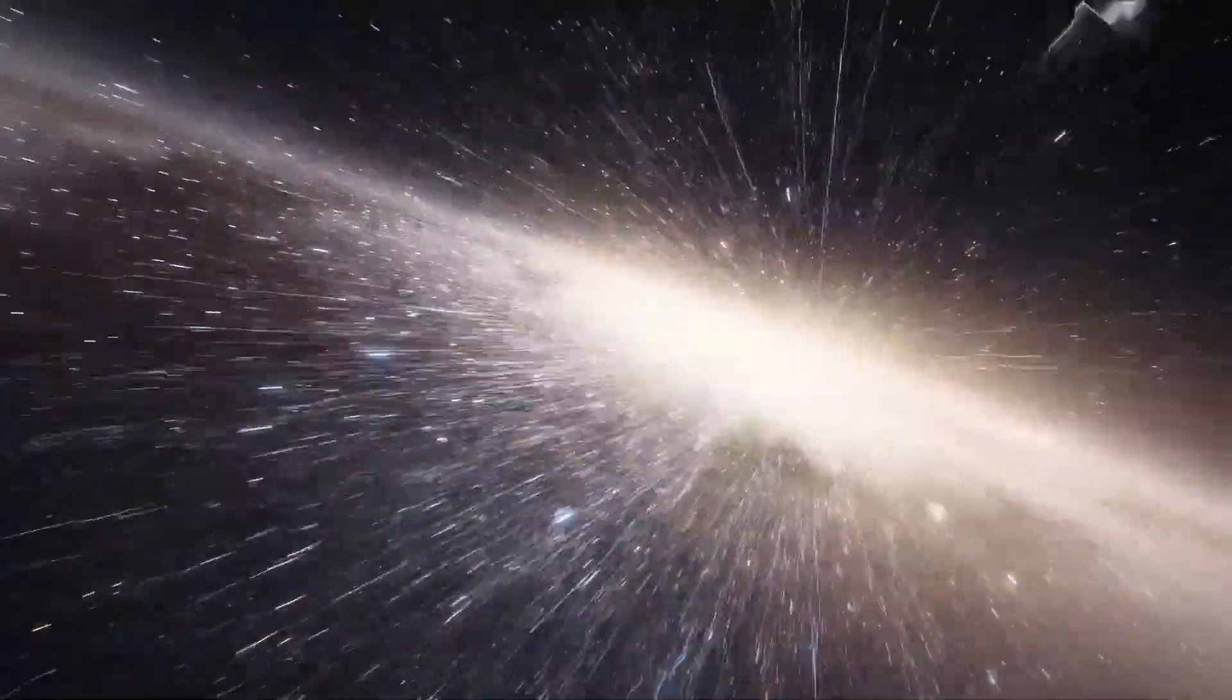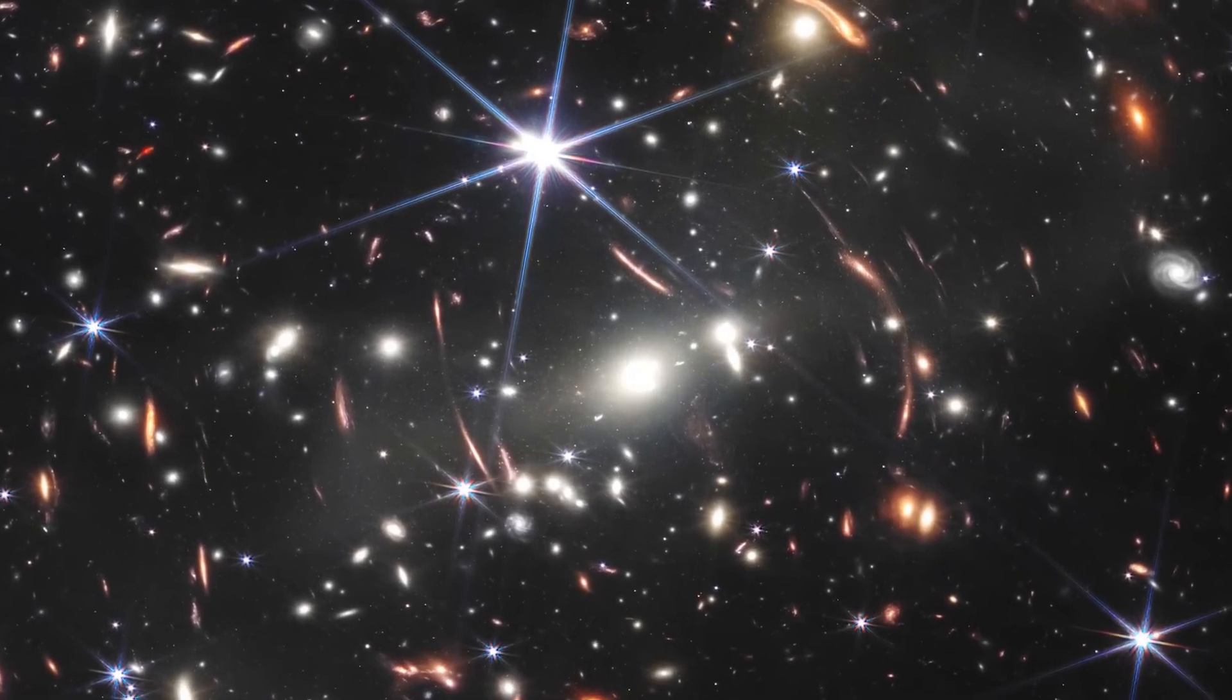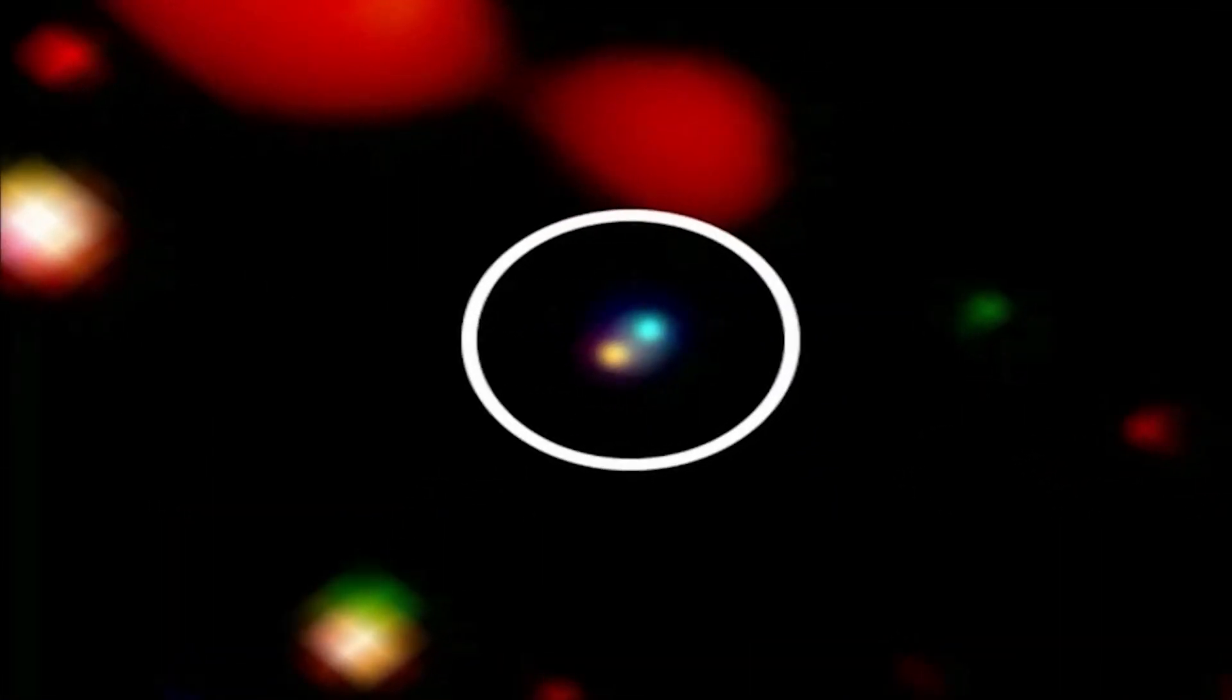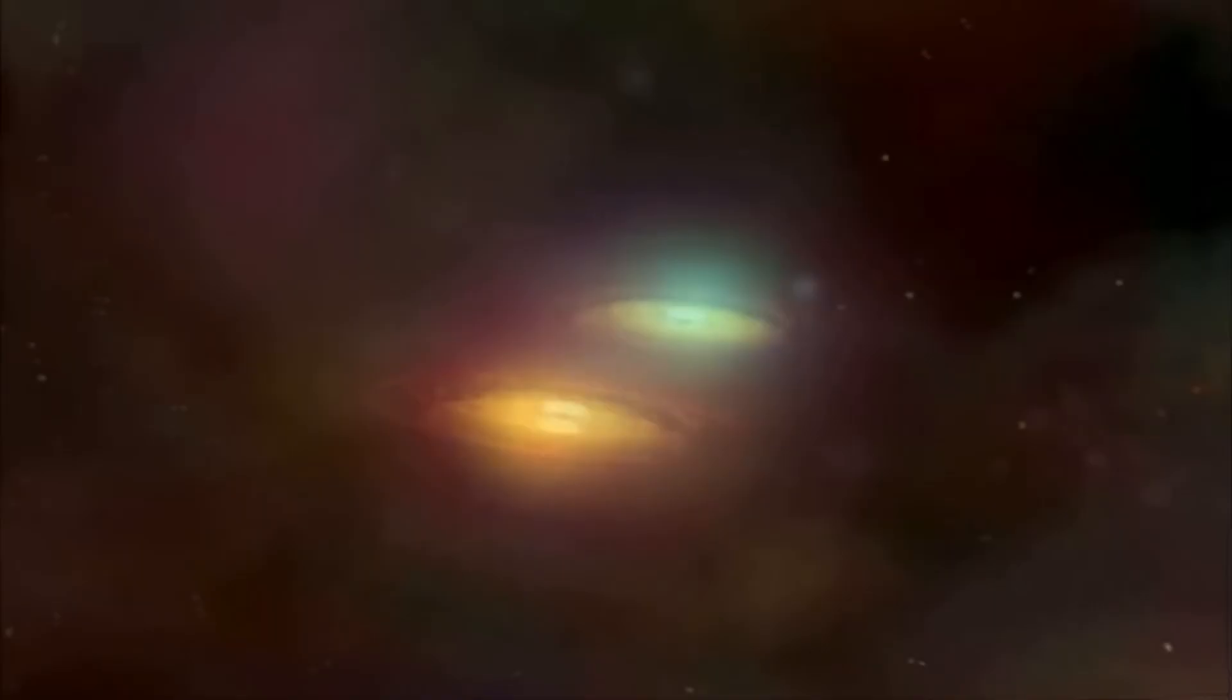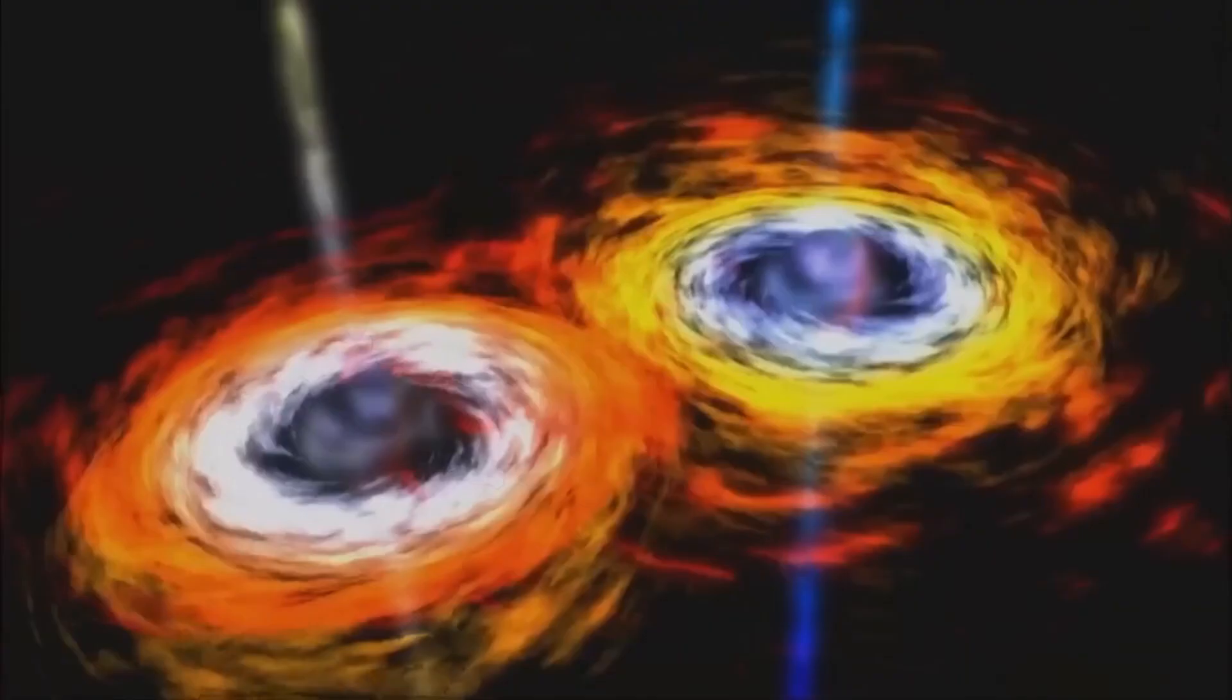Now, researchers can measure the velocities of these seven galaxies, which gives them the confidence to confirm that they are bound together in a proto-cluster. To put this in perspective, NASA scientists compared these distant galaxies to small drops of water in different rivers that will eventually join together to form a large and powerful river.